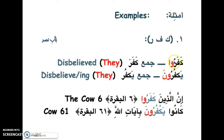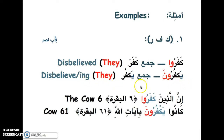The red part in the word is the pronoun 'they' in both cases. 'Kafaru' means 'they disbelieved'. 'Yakfurun' is the plural form — 'they are disbelieving' or 'they disbelieve' continuously in the present sense. You'll find this word a lot in the Quran: kafara, yakfur, kafaru, yakfurun, kafir — this root has many, many words.